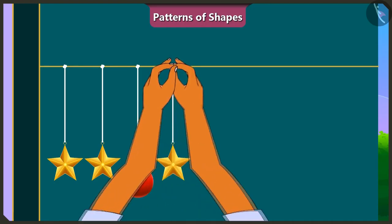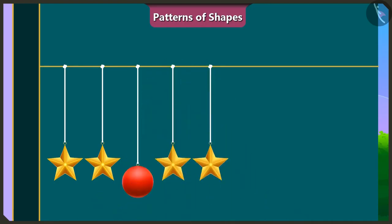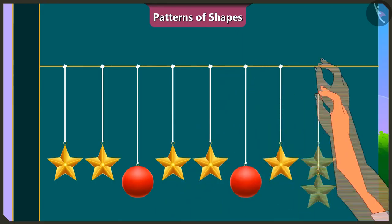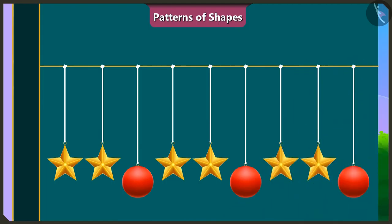And then we can put two stars and a spear like this again. We can continue with this pattern. And now the toran is complete by repeating this special pattern. The pattern of this toran is really beautiful. Very good. Both of you have decorated the door beautifully. Thank you, ma'am.